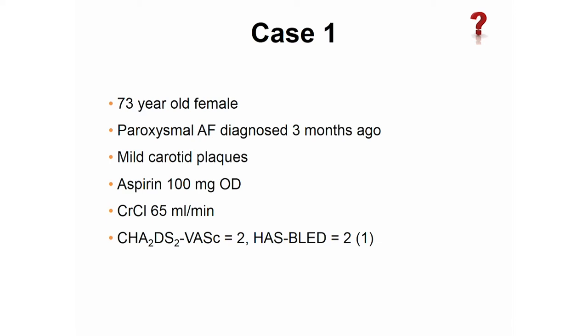I start with this case. It's a lady, 73 years old, diagnosed with paroxysmal atrial fibrillation, non-sinus rhythm. She was started, for whatever reason, on aspirin, with just mild carotid disease. Kidney function is okay. CHADS-VASc score of 2, and using the HAS-BLED score, she has a HAS-BLED score of 2 because of her age and aspirin co-medication.